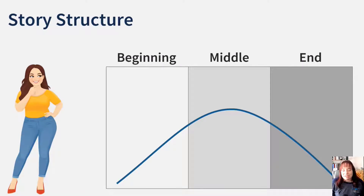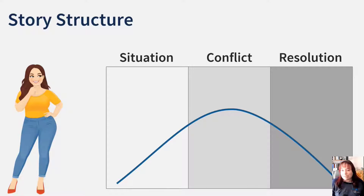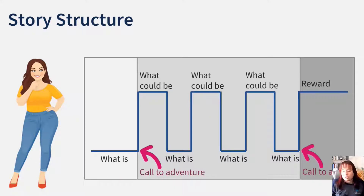In addition to those familiar elements, stories have a recognizable structure. It often takes the form of a beginning, a middle, and an end — or situation, conflict, and resolution. At the beginning we introduce context, setting, and characters. Then we introduce the conflict and build it to a climax before arriving at the resolution. Another common structure, especially in data storytelling, is using the middle of the story to explain what could be and contrasting that with how things currently are.